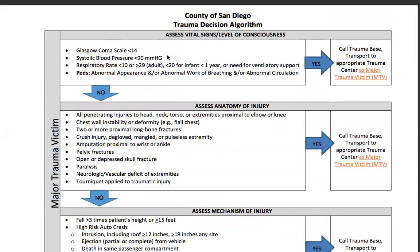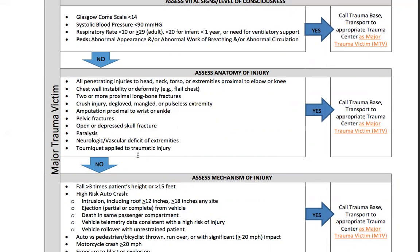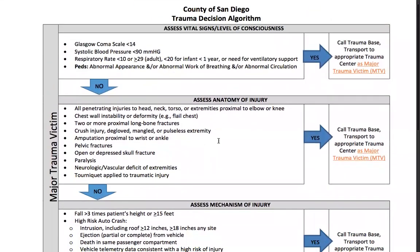The vital signs and anatomy criteria include: GCS less than 14, systolic pressure less than 90, respiratory rate less than 10 or greater than 29 in adults. All penetrating injuries to the head, neck, torso, or extremities proximal to the elbow or knee. Chest wall instability or deformity like a flail chest. Two or more proximal long bone fractures. A crush injury with a degloved, mangled, or pulseless extremity. Amputation proximal to the wrist or ankle. Pelvic fractures. Open or depressed skull fracture. Paralysis. Neurologic or vascular deficit of the extremities — if you do your PMS check and they don't check out. And a tourniquet applied to a traumatic injury.